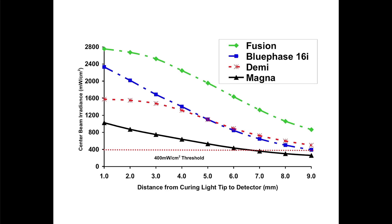The study also shows that the irradiance and beam homogeneity from the light are affected by the distance and the choice of curing light.